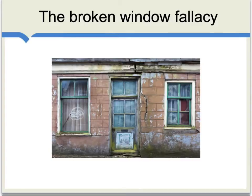Bastiat gives a very famous example of what is called the broken window fallacy. Imagine that a boy came along and broke a window in a house — you might think this creates jobs. After all, someone has to be hired to fix the window, and that person has to buy glass and materials. You might think this is good for an economy. But Bastiat saw that this analysis was confusing the seen with the unseen. The money spent on fixing the window, had the window not been broken, would have gone to other uses, created other jobs, and actually would have resulted in a more productive economy.